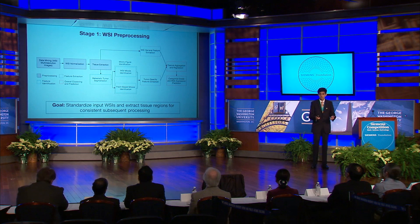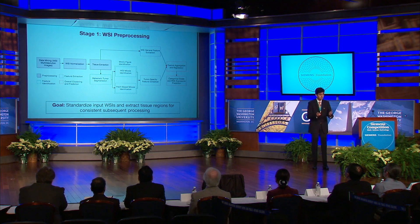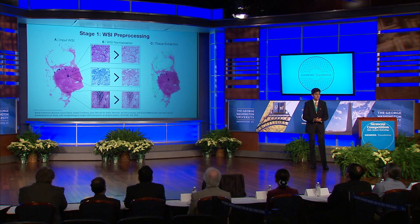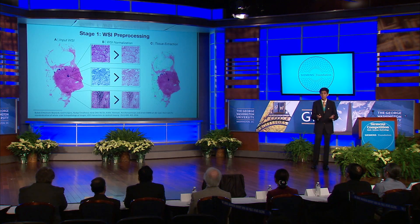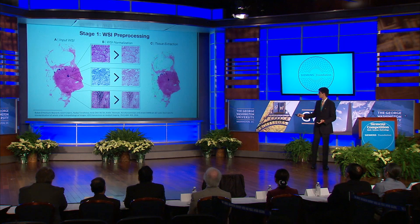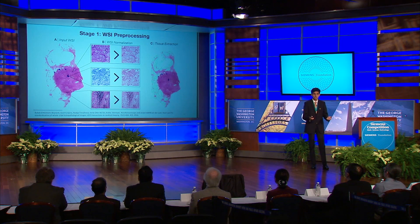The first stage of my pipeline has a primary goal of standardizing input whole slide images and extracting subsequent tissue regions for consistent processing. Figure A depicts a downscaled representation of an input whole slide image. To standardize this image, I employ Begnordi et al.'s 2015 WSI-CS algorithm, which uses whole slide color information to align the chromatic and density distributions of each color component. The resulting normalized outputs are shown in Figure B, which are used with an adaptive thresholding algorithm to select the tissue regions within the green outlines, as in Figure C.